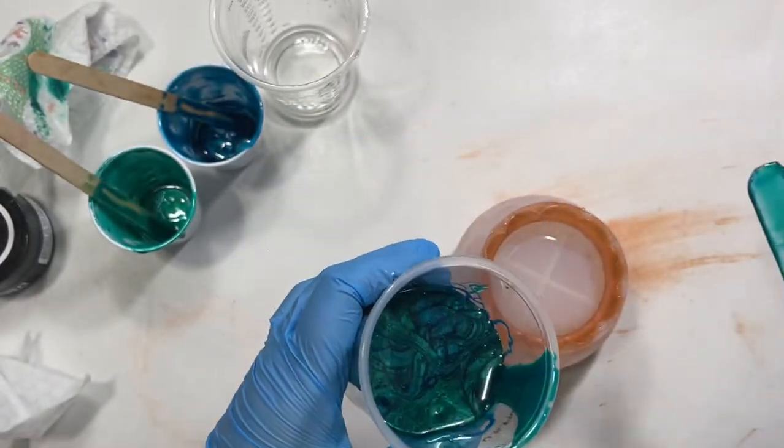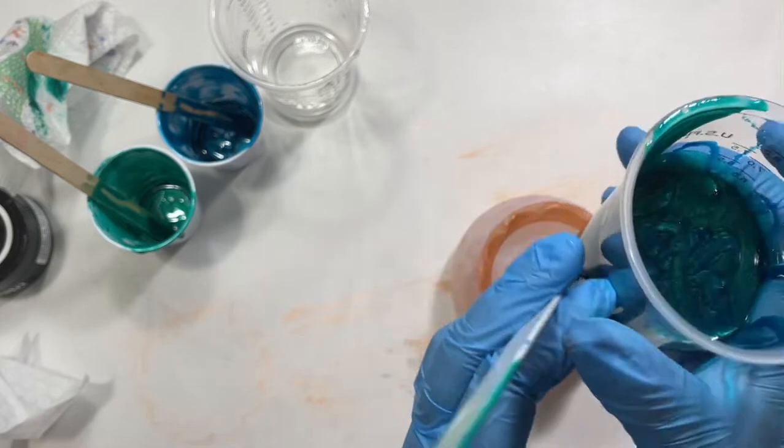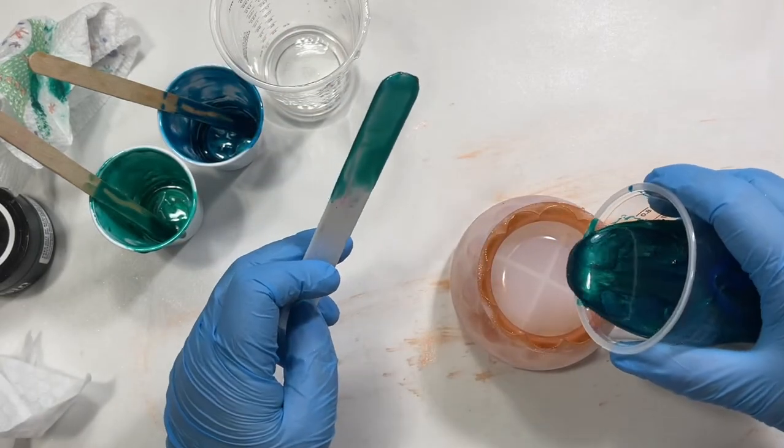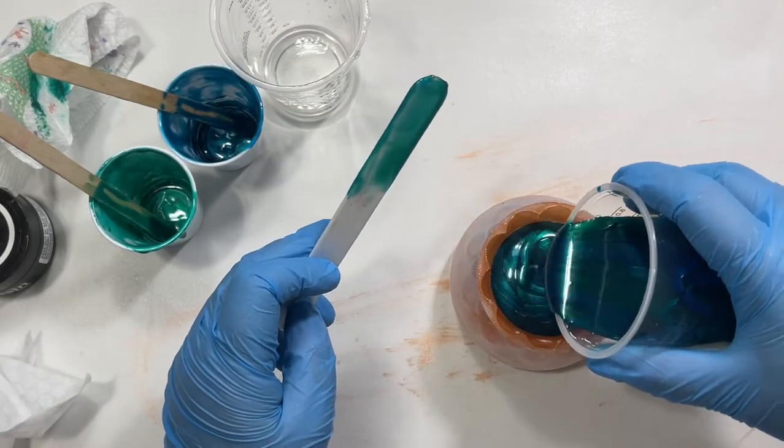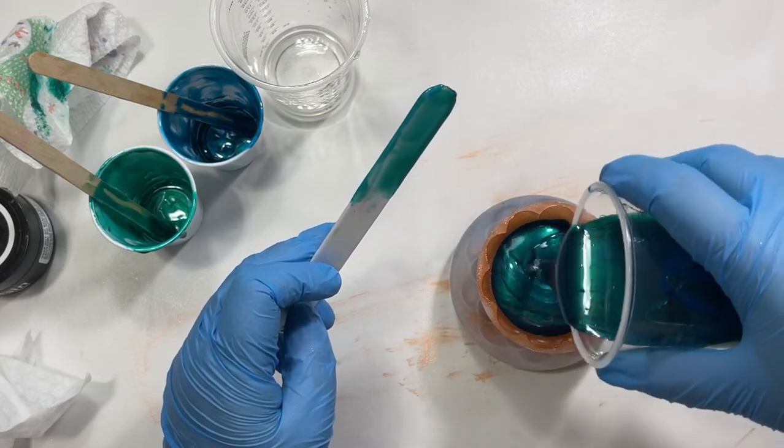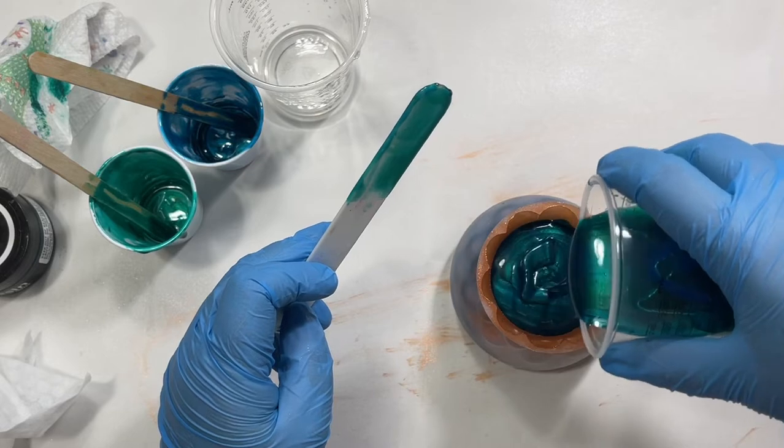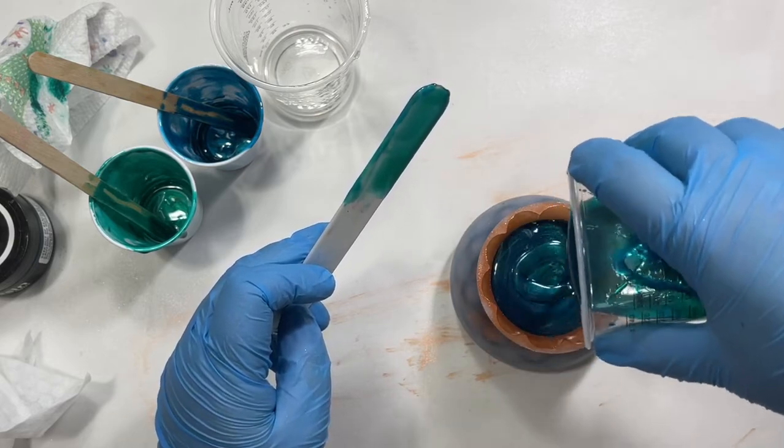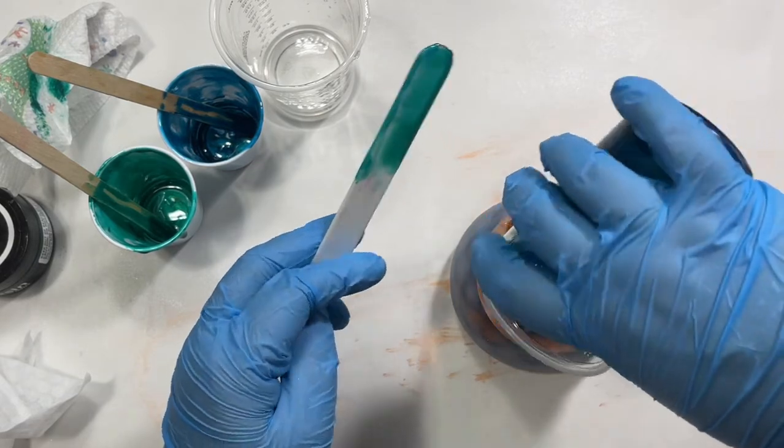You can see the colors are kind of swirled together. Then as I pour I'm going to just kind of swirl the cup around a little bit and encourage those colors to move around a little more organically than just a straight pour.